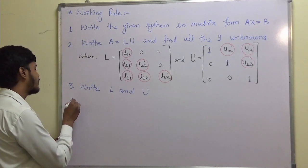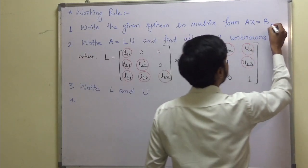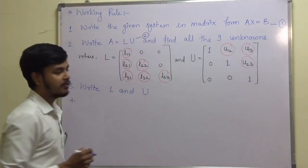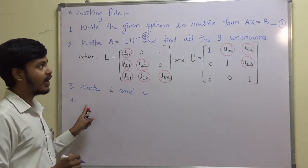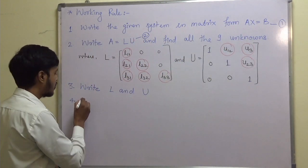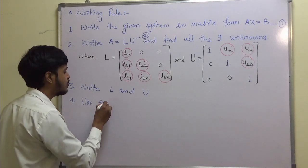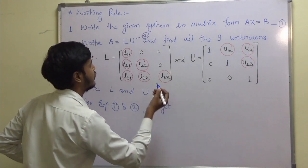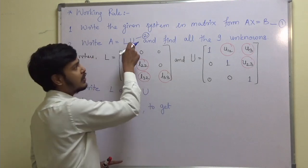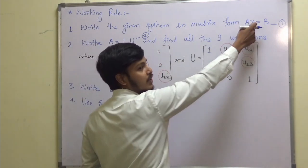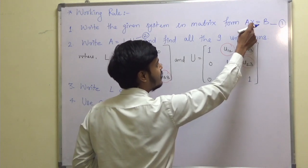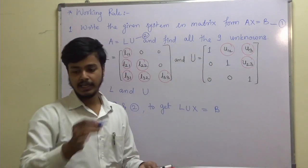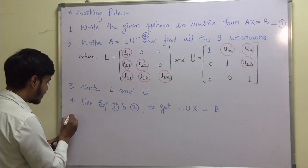Talking about step number 4: this matrix form is A x equal to B — call it equation 1. Since A equals LU, when you substitute A equal to LU into equation 1, you get LU x equal to B. That is step 4.